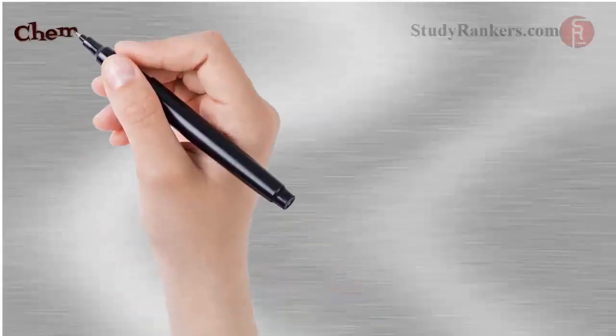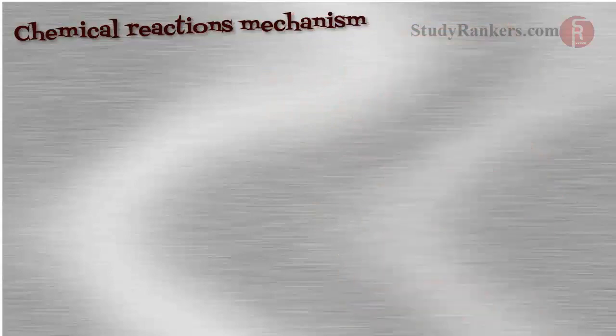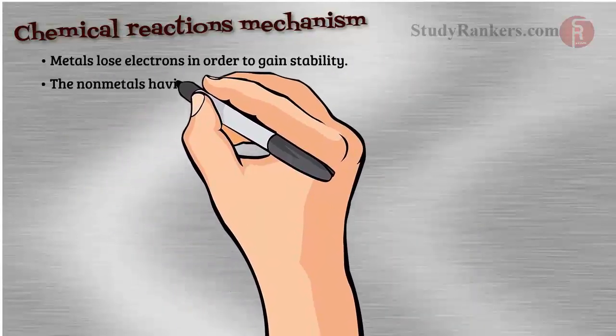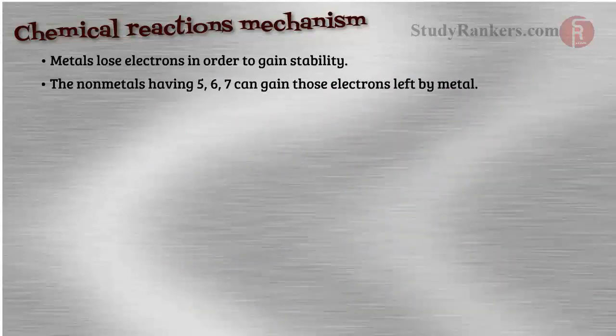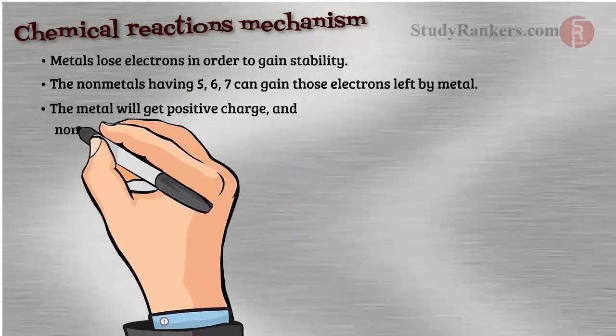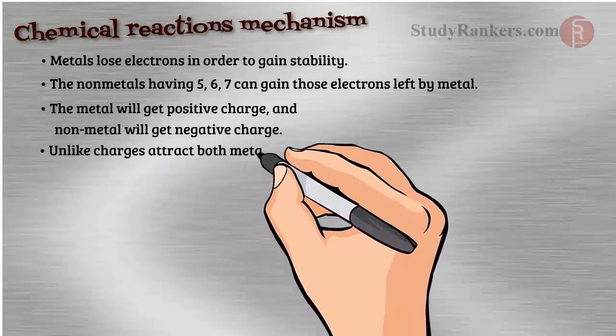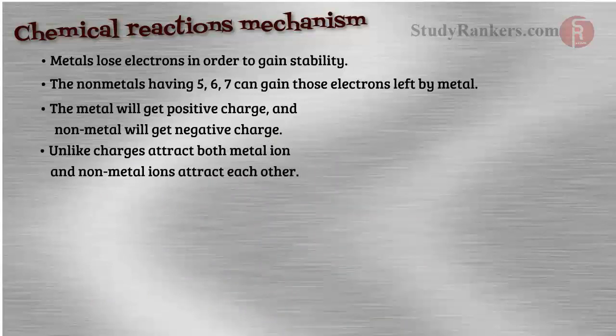Now we can represent chemical reaction mechanism easily. We studied earlier: each atom, in order to gain stability, wants eight electrons in its outermost orbit. Metals, as mentioned earlier, are having one, two, or three electrons in outer orbit. They can lose those electrons in order to gain stability. Similarly, the non-metals having five, six, seven can gain those electrons left by metal. In the process, the metal will get positive charge and non-metal will get negative charge. Unlike charges attract. Thus, both metal ion and non-metal ions attract each other. This bond formed by ions is hence known as ionic bond.